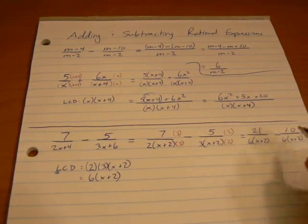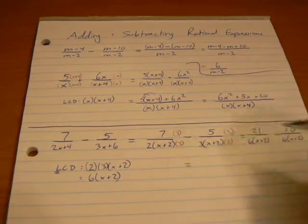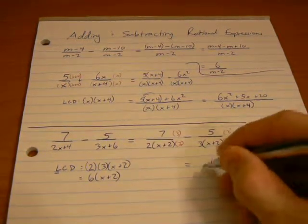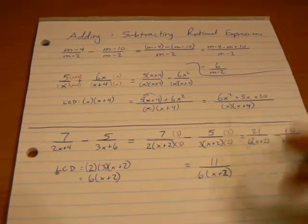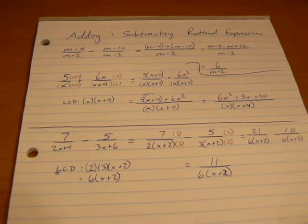Now, I've got the common denominator in both. I can rewrite this as 21 minus 10, which is 11, over 6 times x plus 2. And there's nothing else we can simplify or factor out, so we're done with that one there.